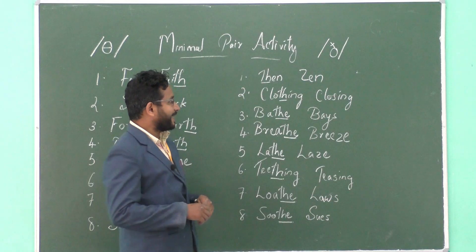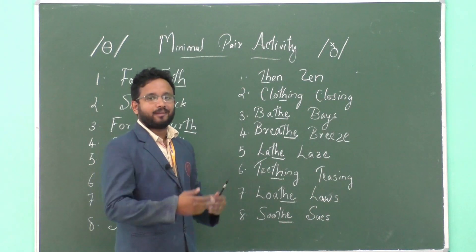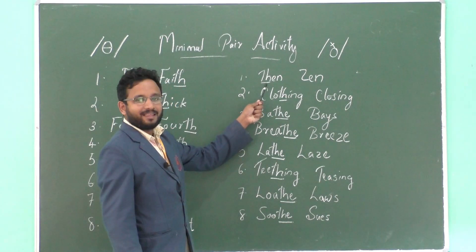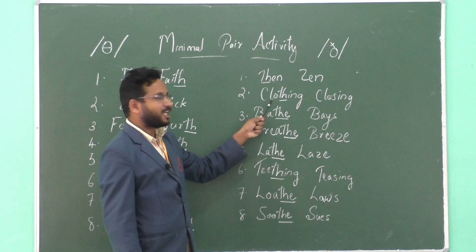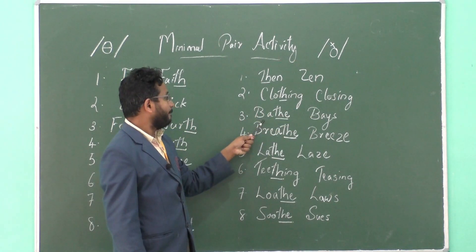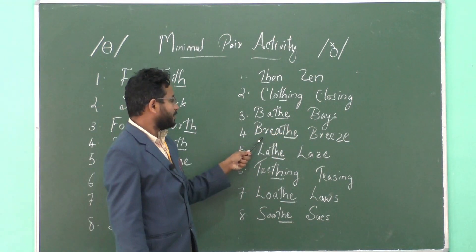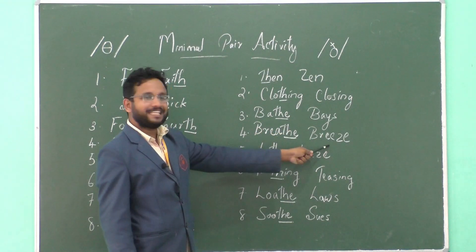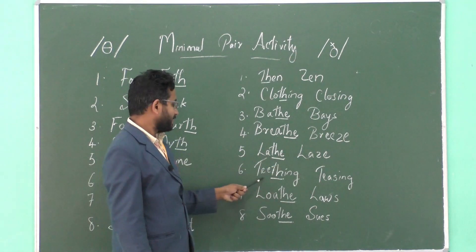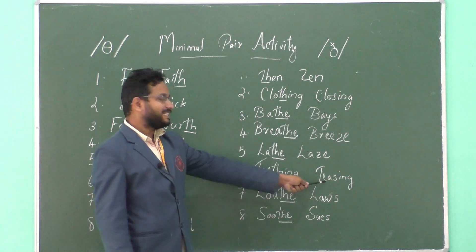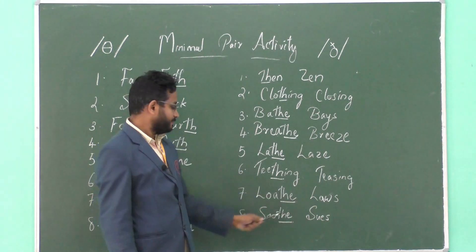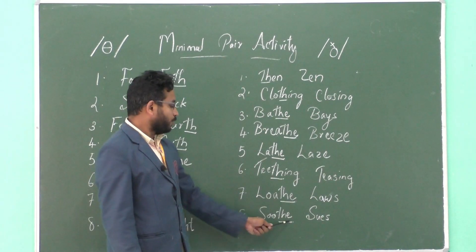Now let's pronounce these pairs a bit more. Then, clothing — closing, bathe — base, breathe — breeze, laid — laze, teething — loathe, loathe, loathe.